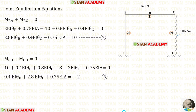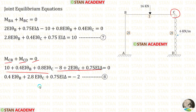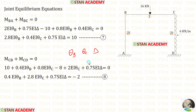Now let us make the joint equilibrium equations. At joint B, when we add moments M_BA and M_BC it equals 0. Let us apply the expressions for M_BA and M_BC from the slope deflection equations. At joint C, when we add moments M_CB and M_CD it also equals 0. Let us apply the expressions for M_CB and M_CD and add both of them. In this analysis there are three unknowns: theta B, theta C, and delta. To find these three unknowns we need three equations, but right now we only have two. Let us see how to make the third equation — the shear equation.